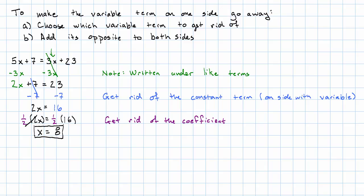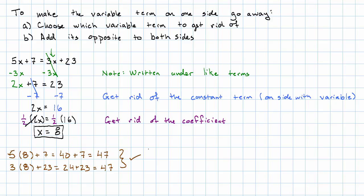Let's check and make sure that that worked. On the left, I have 5 times 8 plus 7 — that's 40 plus 7, which is 47. On the right, I have 3 times 8 plus 23 — that's 24 plus 23, which is again 47. Notice that these are the same, so that actually checks out.